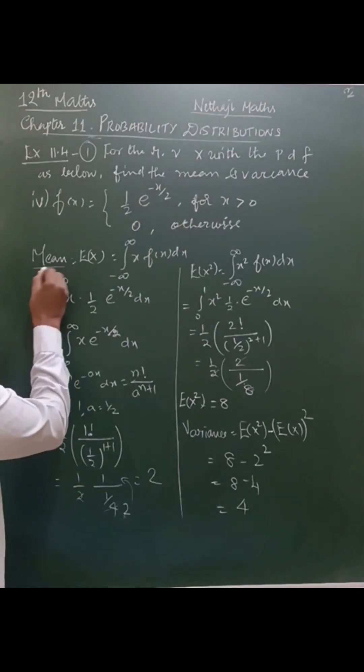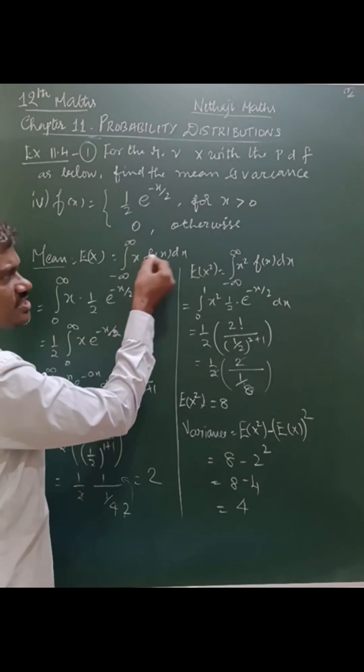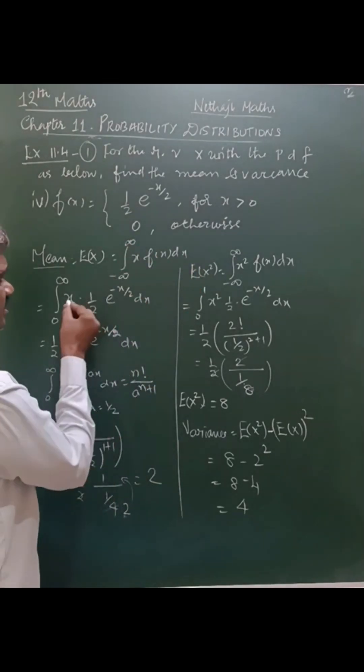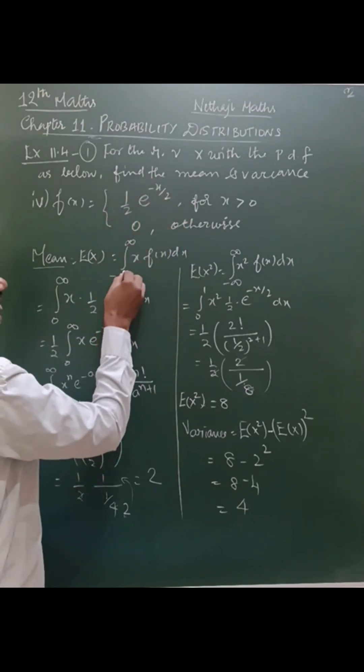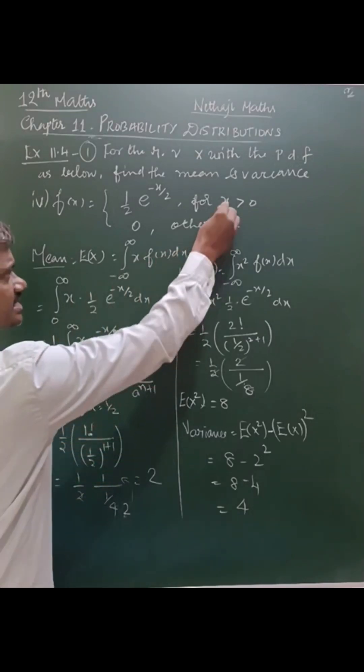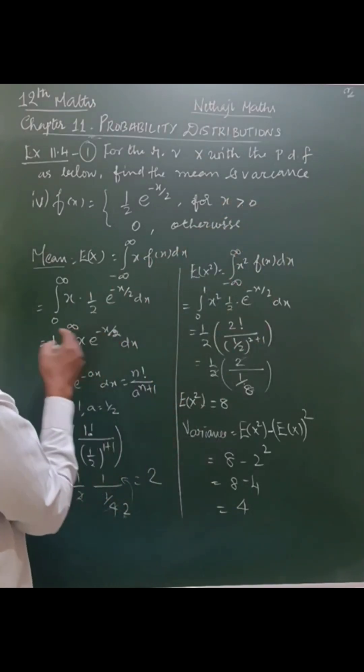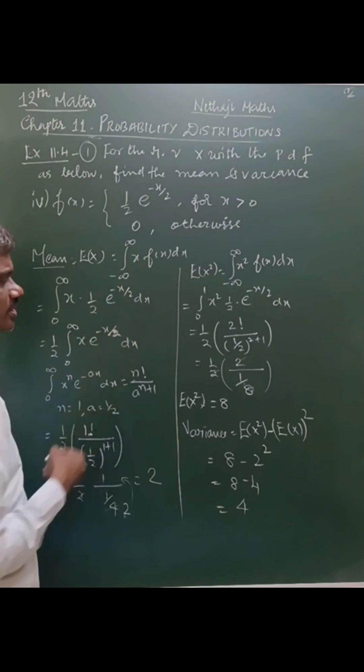First we have to find the mean, that is E(x) equals integral minus infinity plus infinity x into f(x) dx. That is the formula. Since x is greater than 0, that is 0 to infinity x into one-half e power minus x by 2 into dx.